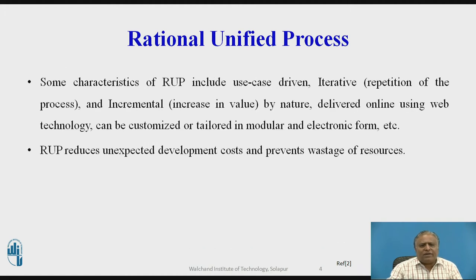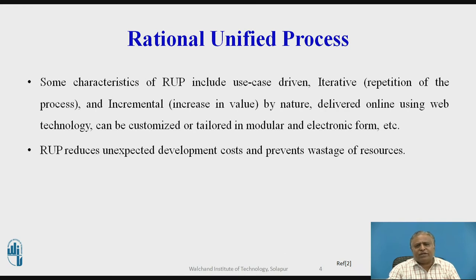Some characteristics of Rational Unified Process include: use-case driven; iterative, meaning repetition of the process; and incremental, meaning increase in value by nature; delivered online using web software technology; can be customized or tailored in modular and electronic form. Rational Unified Process reduces unexpected development costs and prevents waste of resources, so by using this model we can reduce cost and wastage of resources in software development.